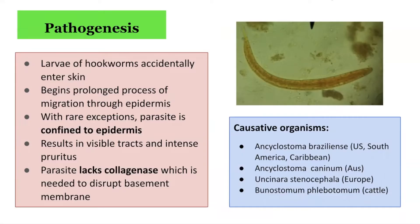The image on the right-hand side demonstrates an example of one of these hookworms. The causative organisms include Ancylostoma braziliense, which is based in the United States, South America, and the Caribbean; Ancylostoma caninum, which is from Australia; Uncinaria stenocephala, which is based in Europe; and Bunostomum phlebotomum, which can be obtained from cattle.